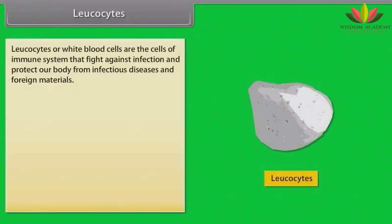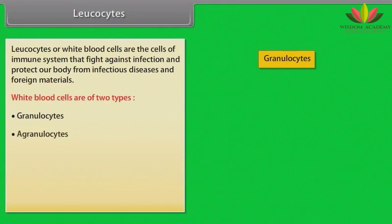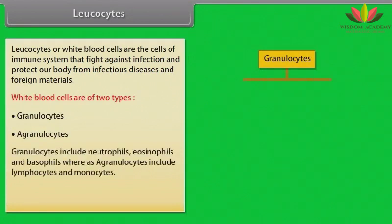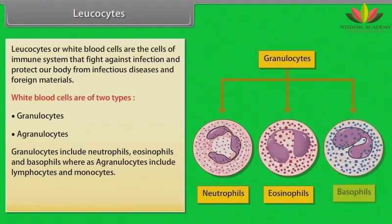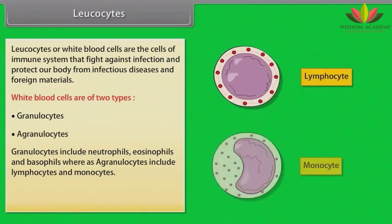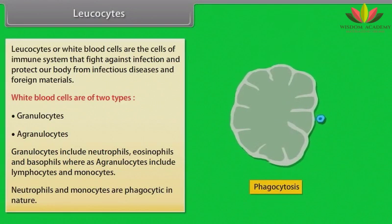Leucocytes, or white blood cells, are cells of the immune system that fight against infection and protect our body from infectious diseases and foreign materials. White blood cells are of two types: granulocytes and agranulocytes. Granulocytes include neutrophils, eosinophils, and basophils, whereas agranulocytes include lymphocytes and monocytes. Neutrophils and monocytes are phagocytic in nature.